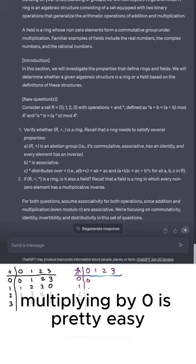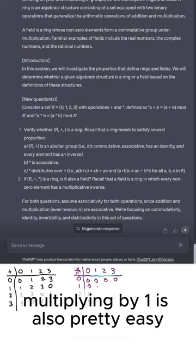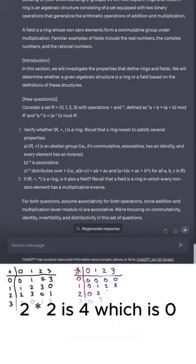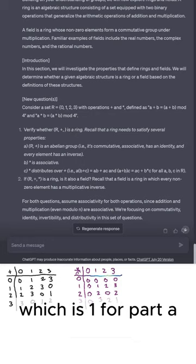Multiplying by zero is pretty easy since zero times anything is 0 mod 4. Multiplying by one is also pretty easy since one is the multiplicative identity. Two times two is 4, which is 0. Two times three is 6, which is 2. And three times three is 9, which is 1.